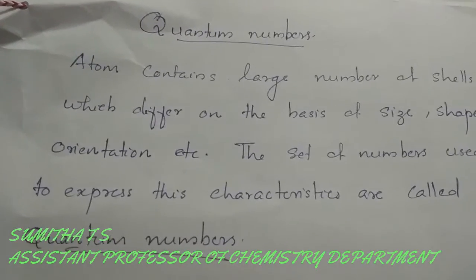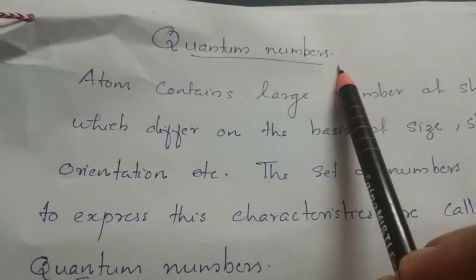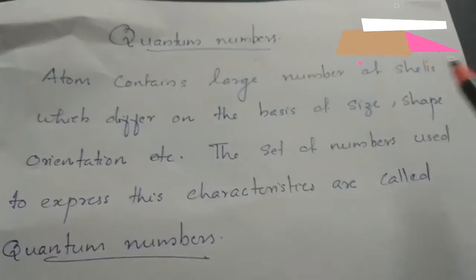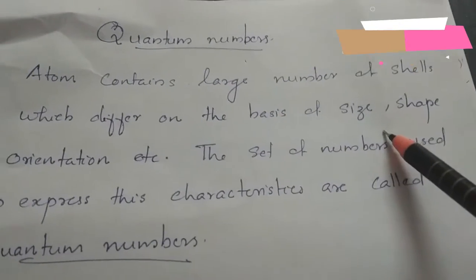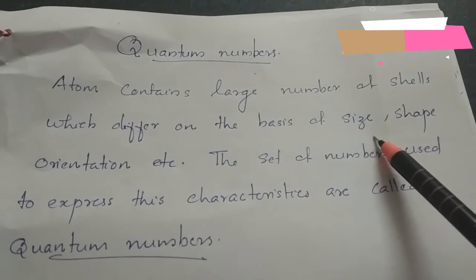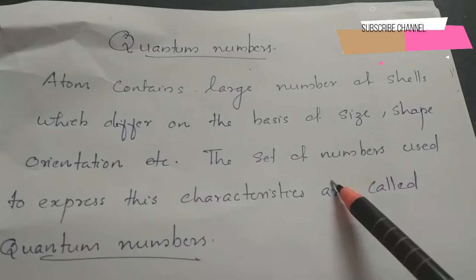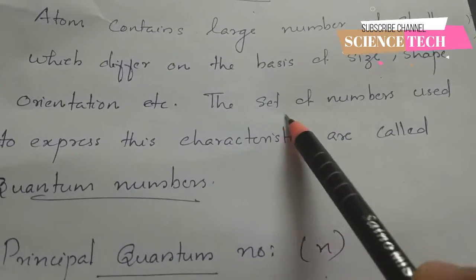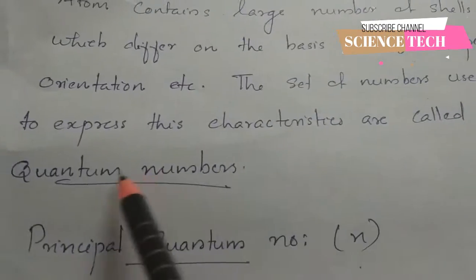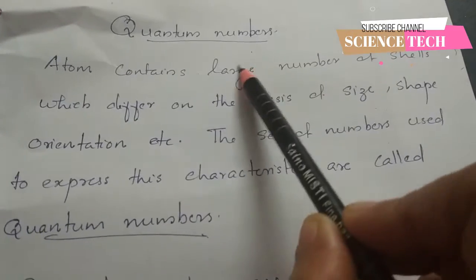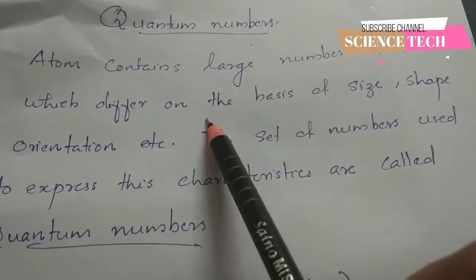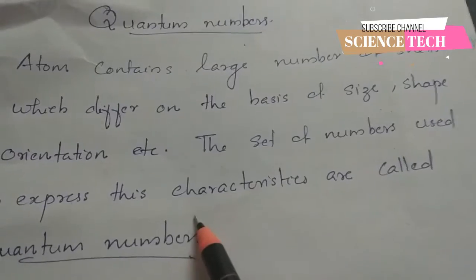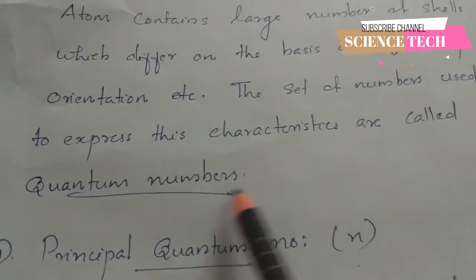In this part, we are going to start with the first part of the quantum numbers. We have a lot of orbits and shells. Each orbit is different in size, shape, and orientation. These orbits and shells are different, so we use a set of numbers. Atoms contain a large number of shells which differ on the basis of size, shape, orientation, etc. The set of numbers used to express these characteristics are called quantum numbers.